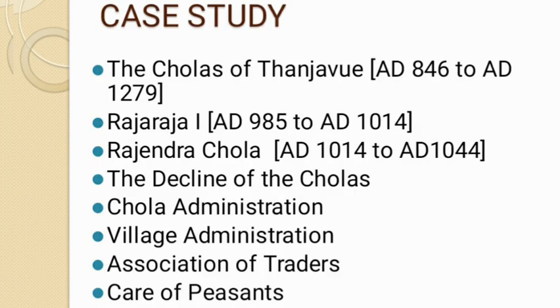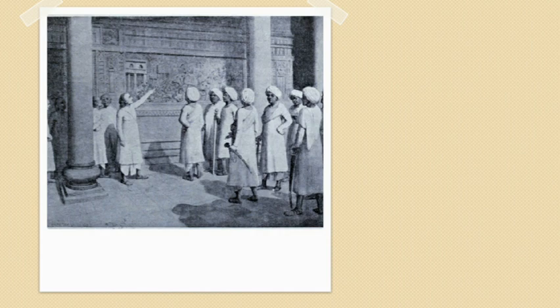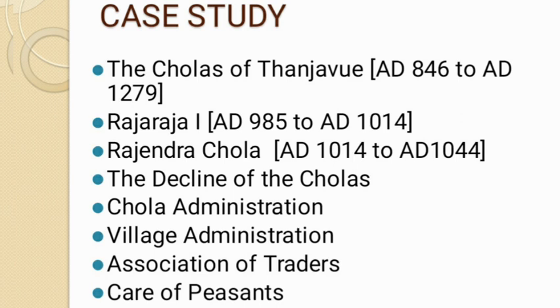Chola administration was very well organized. The king enjoyed his power and glory in his kingdom and had groups of ministers to help him. The Chola kingdom was divided into provinces called Mandalam. There were 8 Mandalams in the Chola empire, each headed by a prince or a high official. Each Mandalam had districts called Valanadu, which in Tamil means 'a fertile country.' At the district level, the assembly was called Nattar, and the assembly of a big city was called Nagarattar.